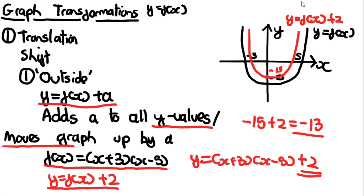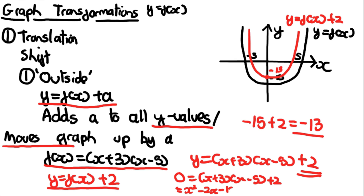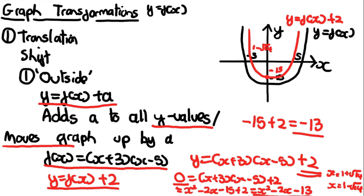To figure out the new roots, make y = 0 and solve. You must expand the brackets: x² + 3x − 5x − 15 + 2 = x² − 2x − 13 = 0. Putting this into a calculator gives x = 1 + √14 and x = 1 − √14. So the new roots are 1 − √14 (the smaller root) and 1 + √14.